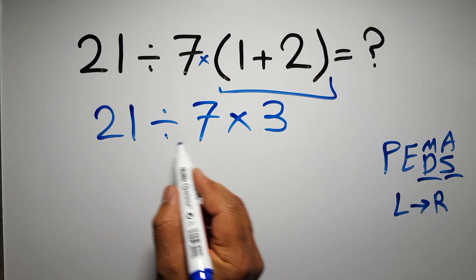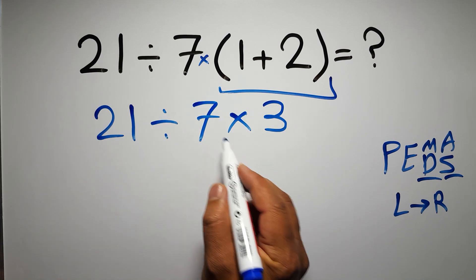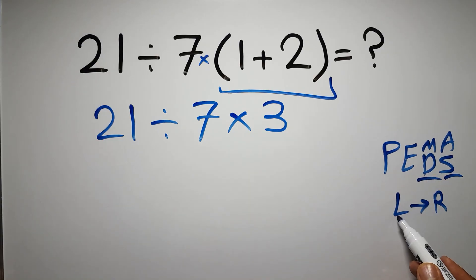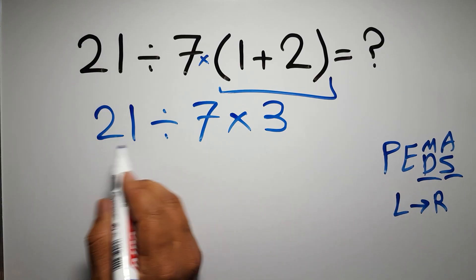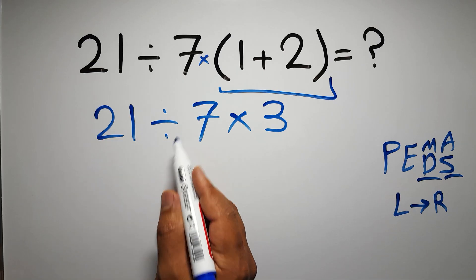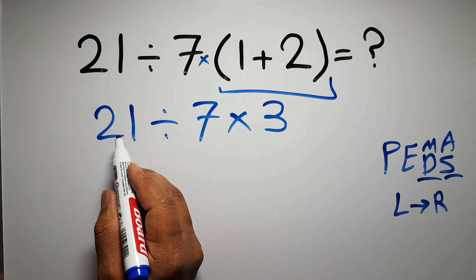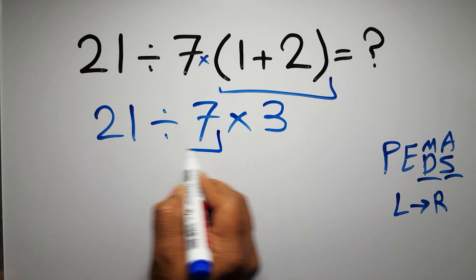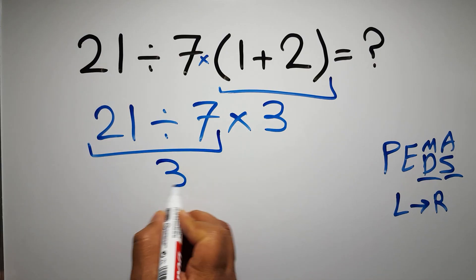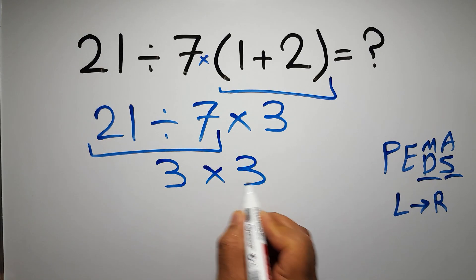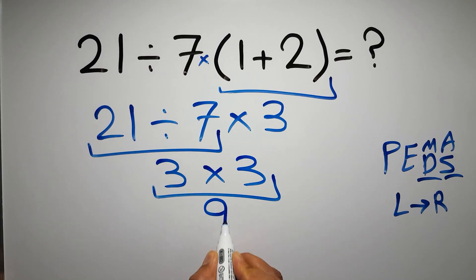Now we have one division and one multiplication. As I said, multiplication and division have equal priority and we have to work from left to right. So here, first we do the division: 21 divided by 7 is 3. Then 3 times 3 gives us 9, and this is our final answer.